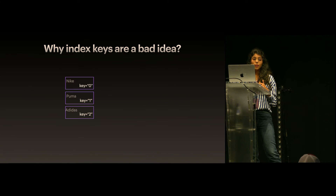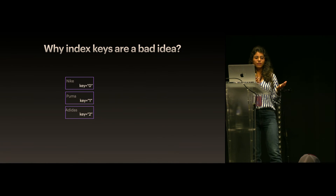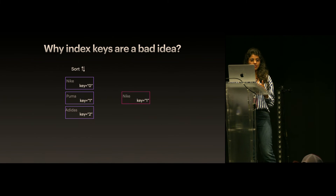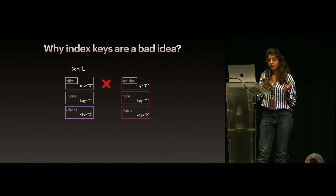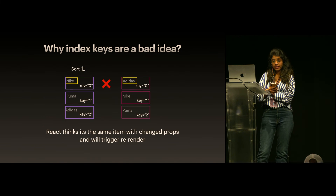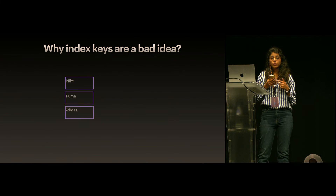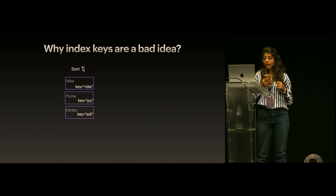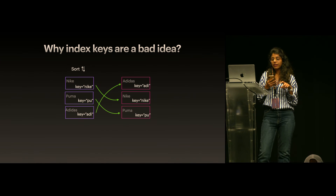This looks great, but there are problems with using index as a key. That was a static list, but what if the list is sortable? When we sort the list, at the same indices there are now different values that don't match. React thinks it's the same item but the props have changed, so it triggers a re-render. But if we use unique IDs as keys, when we sort, React accurately identifies each element by ID and maps them correctly so everything works well — no unnecessary re-renders.